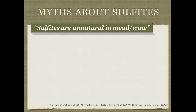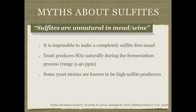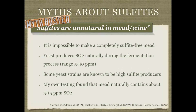Another claim is that sulfites are unnatural in mead or wine — also not exactly correct. It's impossible to make a completely sulfite-free mead because yeast produces some SO₂ during fermentation, anywhere from 5 to 40 or more ppm. Some wine yeast strains are known to be high producers. In my own testing, mead naturally contains around 5 to 15 ppm after primary fermentation. Commercial meaderies can't label their mead as containing no sulfites unless they prove via lab testing it's less than 10 ppm.